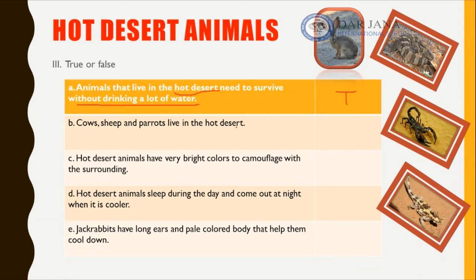'Cows, sheep, and parrots live in the hot desert.' Cows and sheep need grass to eat, and grass is not found in a hot desert — so they cannot live there. The same applies to the parrot. This sentence is false.